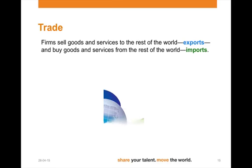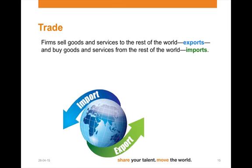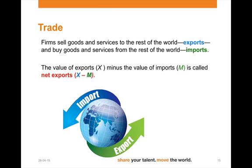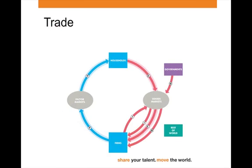The final part is trade. Firms sell goods and services to the rest of the world, which we call exports. But they also purchase goods and services from the rest of the world, which we call imports. The value of exports, which generates a cash inflow, minus the value of imports, which generates a cash outflow, is called net exports, or X-M. If we look in our circular flow of income, we can see X-M creating a demand within firms.